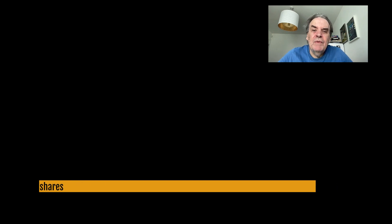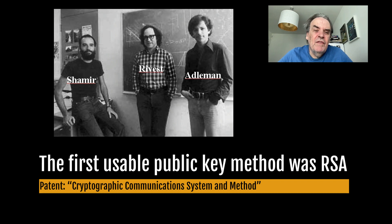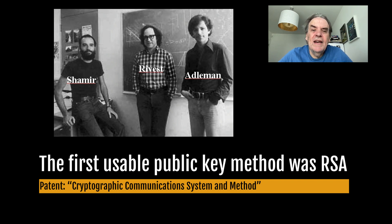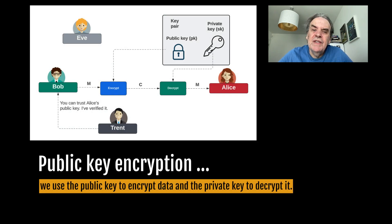The first usable public key encryption method was RSA, created by Rivest, Shamir and Adleman. It was first published in 1979 and defined in an RSA patent entitled 'Cryptographic Communication Systems and Method'.